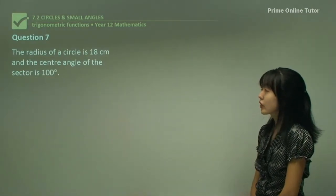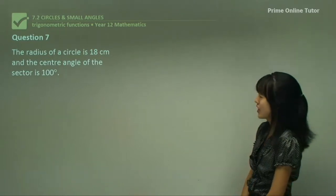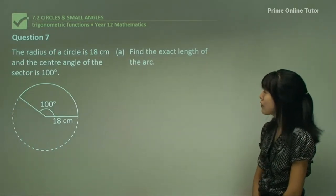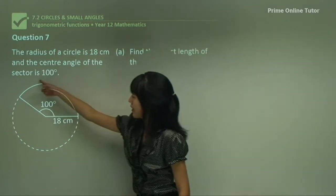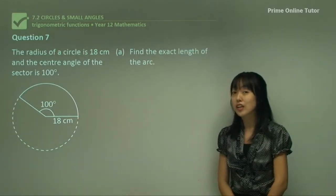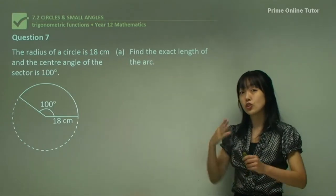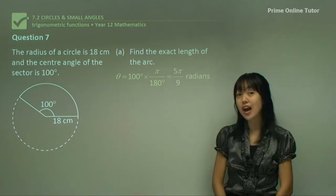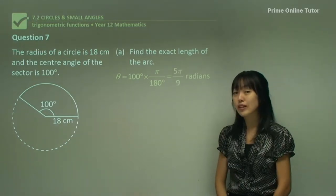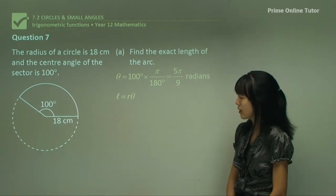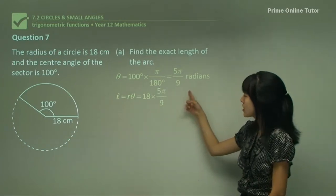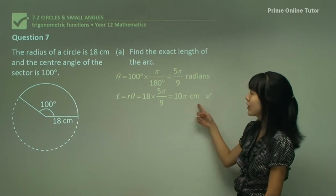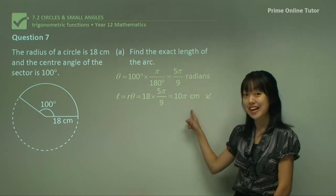Question 7: the radius of a circle is 18 and the angle at the centre is 100 degrees. Part one: find the exact length of the arc. Because the angle is in degrees we convert — we get 5π/9 radians. Using L equals R theta, substituting R as 18 and theta as 5π/9, we get an answer of 10π. Since it says find the exact length, that is the final answer left in terms of pi.